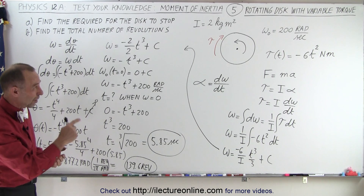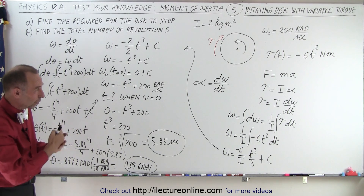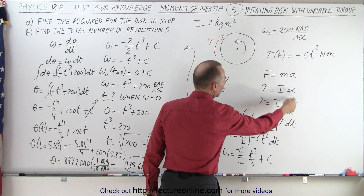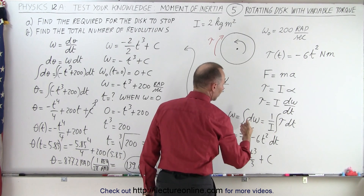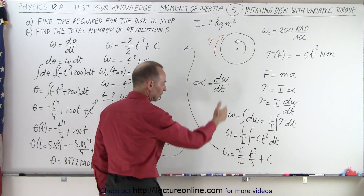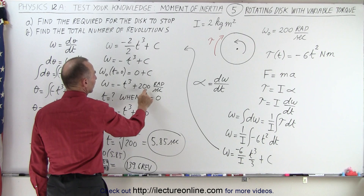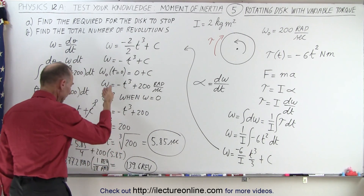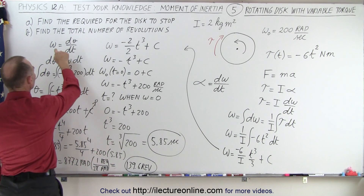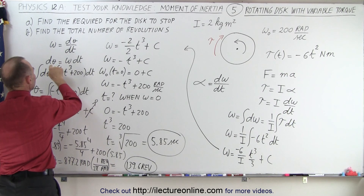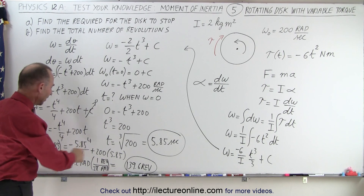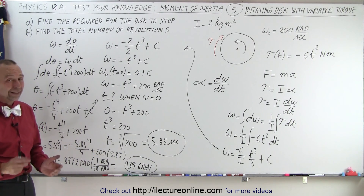To summarize the method: since the torque was variable, we first wrote the equation relating alpha to torque using τ = Iα, then wrote alpha as dω/dt and separated variables. Knowing torque is a function of time, we integrated both sides, found the constant of integration as the initial omega sub-naught, then solved for the stopping time. We then used omega equals dθ/dt to find the angular displacement by integrating again, arriving at the final answer in revolutions.